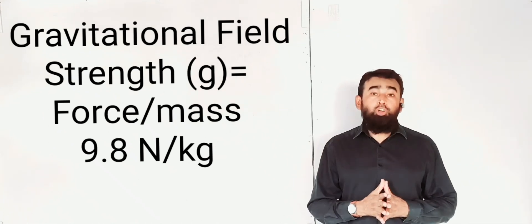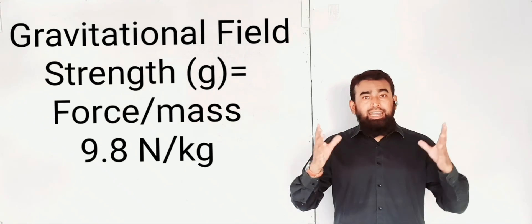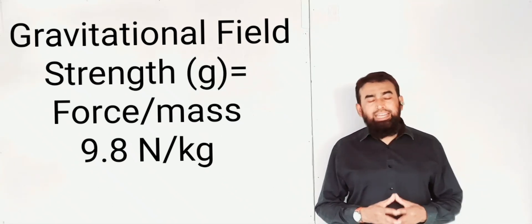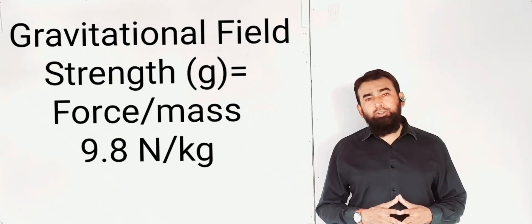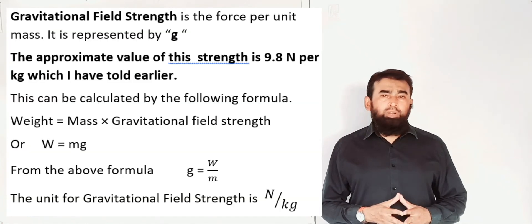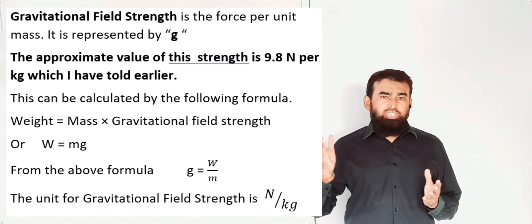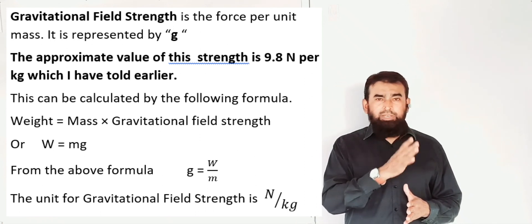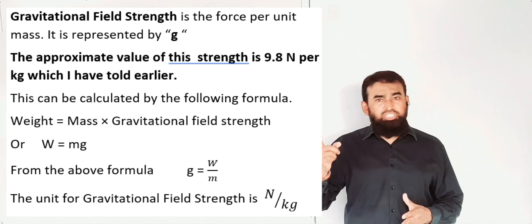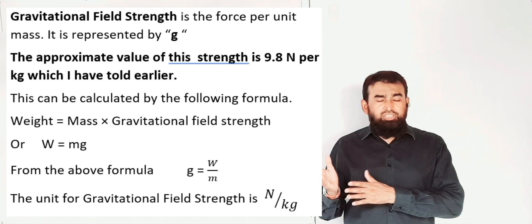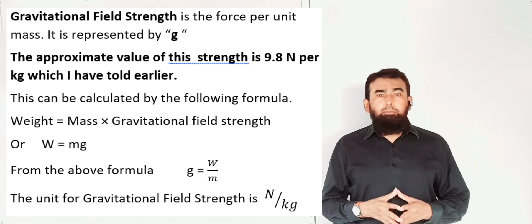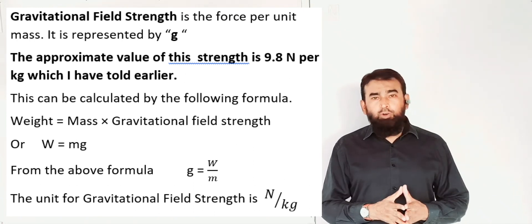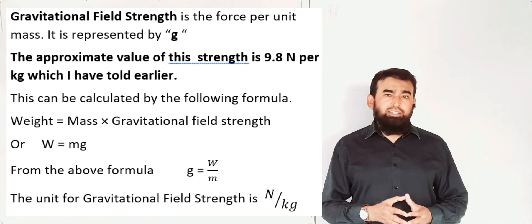The gravitational field strength is the force per unit mass — how much force the earth is applying on a unit mass. It is represented by small g and its approximate value is 9.8 newton per kg. This can also be calculated using the formula: weight equals mass multiplied by gravitational field strength, written as W = mg. From this formula, you can make g the subject: g equals weight divided by mass. The unit for weight is newton and for mass is kilogram, so the unit for gravitational field strength is newton per kg.